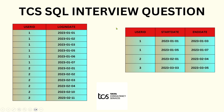Hello everyone, welcome back to my channel Data Sculptor. Today we are going to see another interesting SQL question. The question is: you have a table called logins where you have multiple columns — user_id and login_date — and you have multiple users, each with a set of login dates.